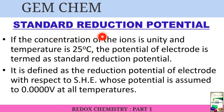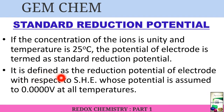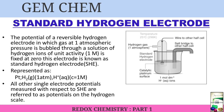What is the standard reduction potential? If the concentration of ions is unity and the temperature is 25°C, the potential of the electrode is termed the standard reduction potential. The concentration of ions in the cell is considered unity and temperature is fixed. The potential of that particular electrode under these conditions is the standard reduction potential, measured with respect to the Standard Hydrogen Electrode (SHE), whose potential is assumed to be 0 volts at all temperatures.